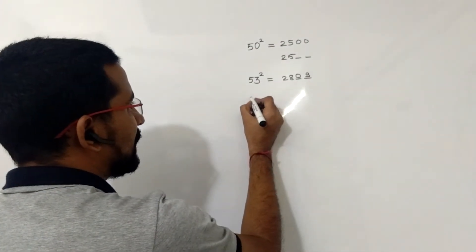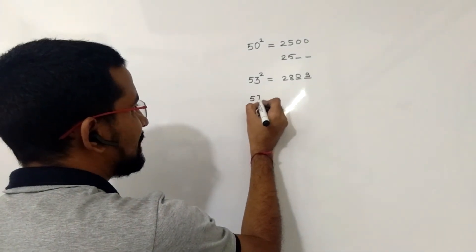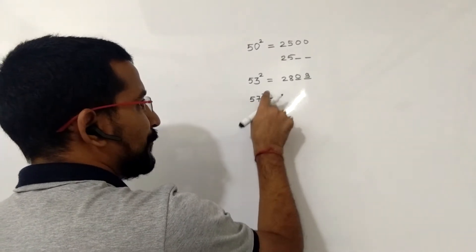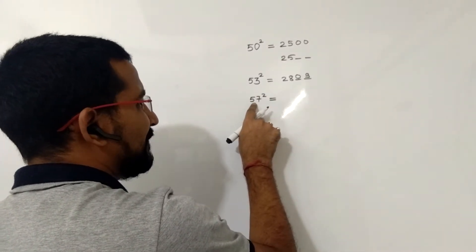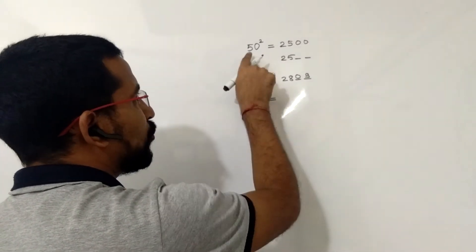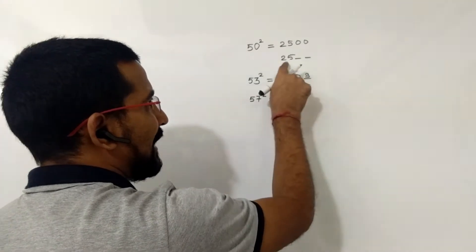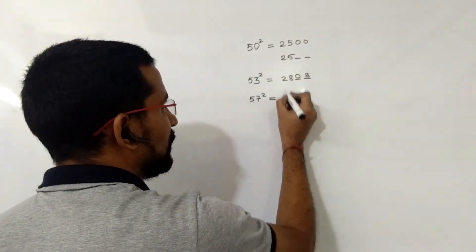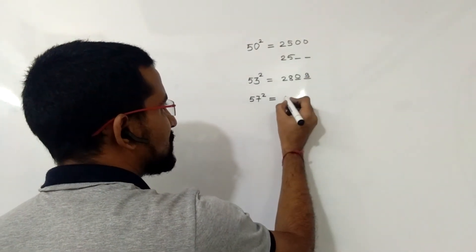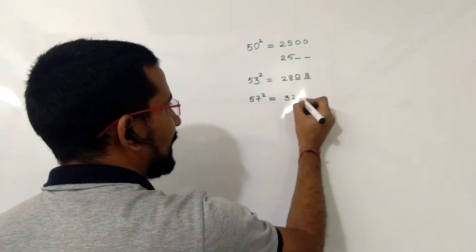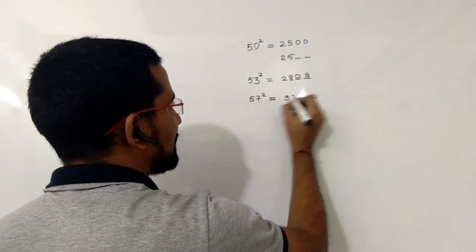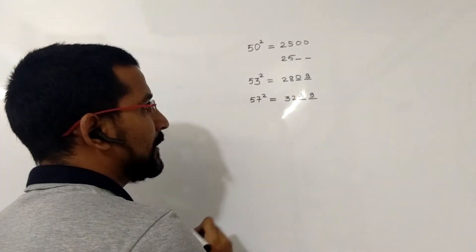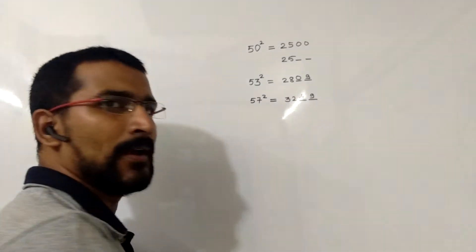Now another example: 57 squared. 57 is 7 more than 50, so I will add 7 to 25, giving 32. The last two spaces are filled by 7 squared, which is 49. So the answer is 3249.